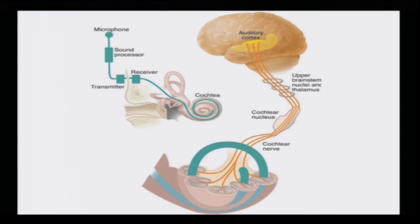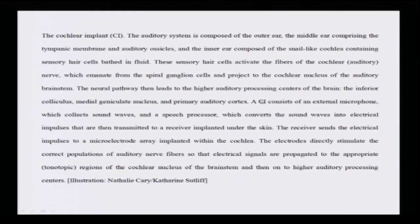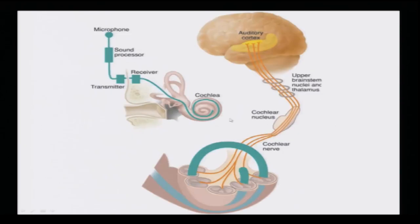The micro-electrode array implanted within the cochlea directly stimulates the correct population of auditory nerves, so that electrical signals are propagated to the appropriate tonotopic regions of the cochlear nucleus of the brain stem and then on to the higher auditory cortex. From here the signal goes to the specific part and moves to the auditory cortex.